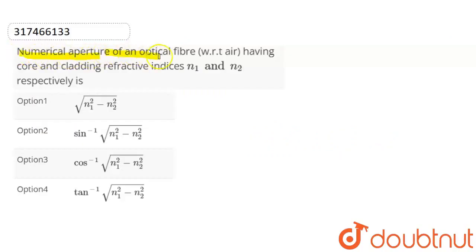The numerical aperture of an optical fiber having the core and cladding refractive indexes n1 and n2 respectively is.